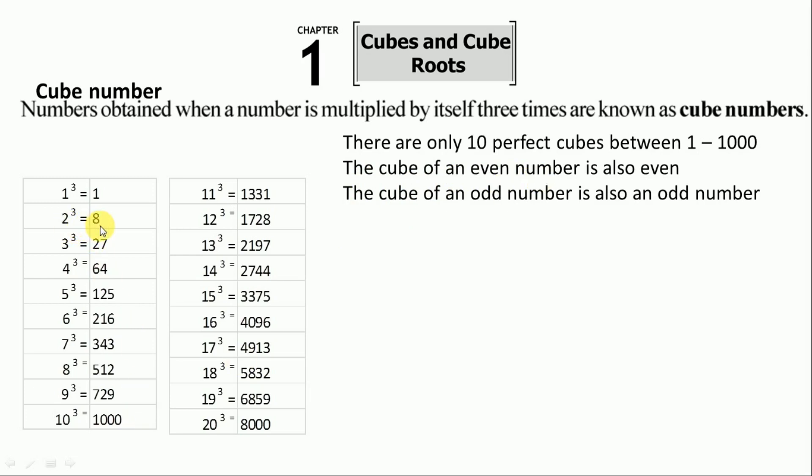Here 4 is an even number and their cube is also even. So the cube of even number is even. Likewise, the cube of odd number is odd.